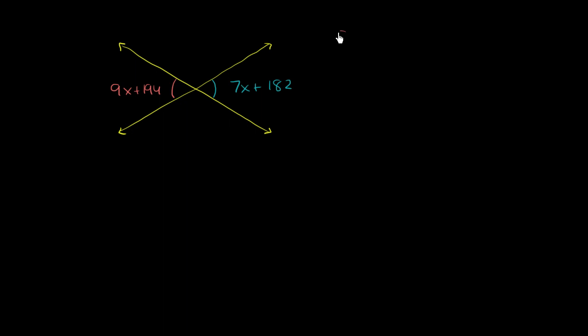So we know, because these are vertical angles, that 9x plus 194 degrees must be equal to 7x plus 182 degrees.